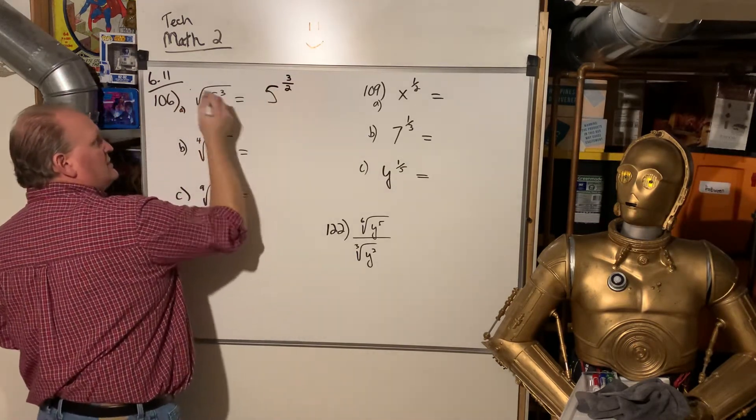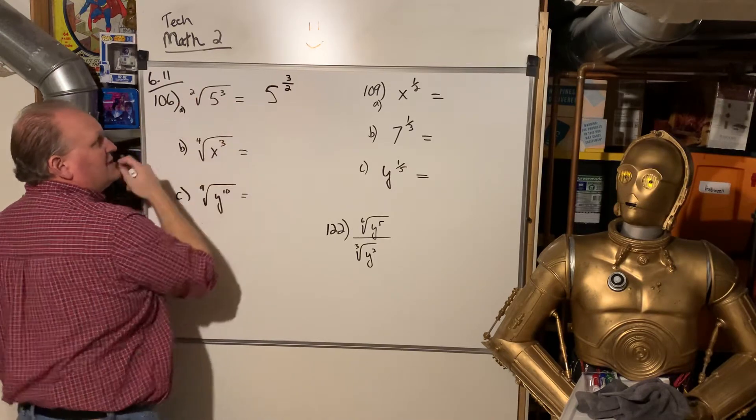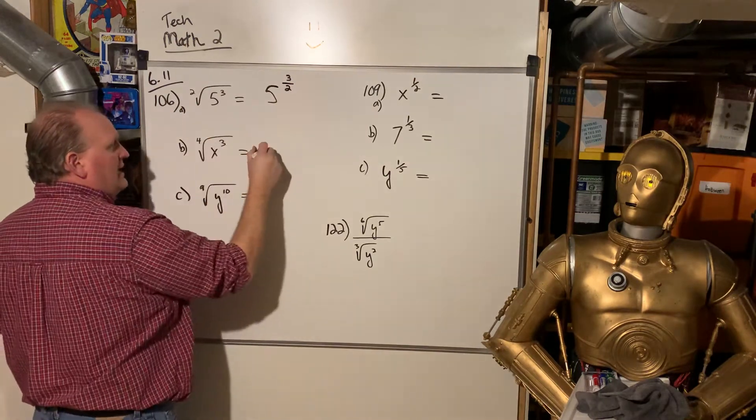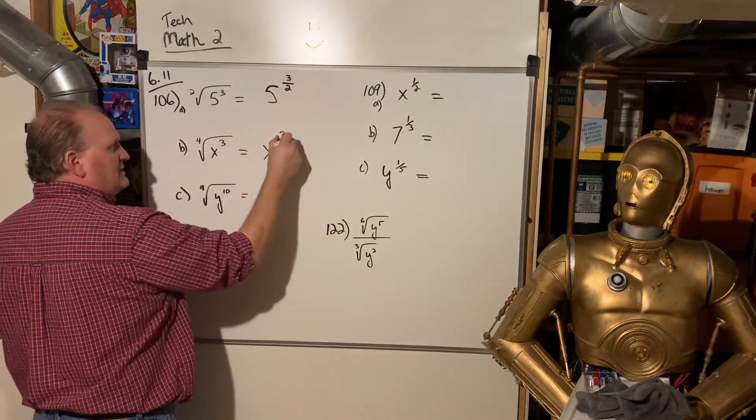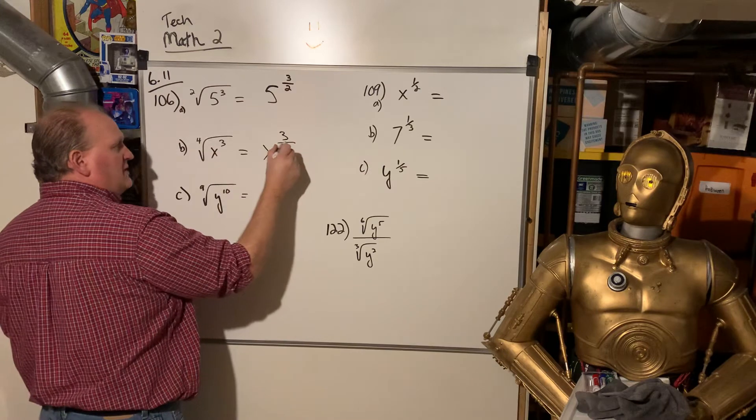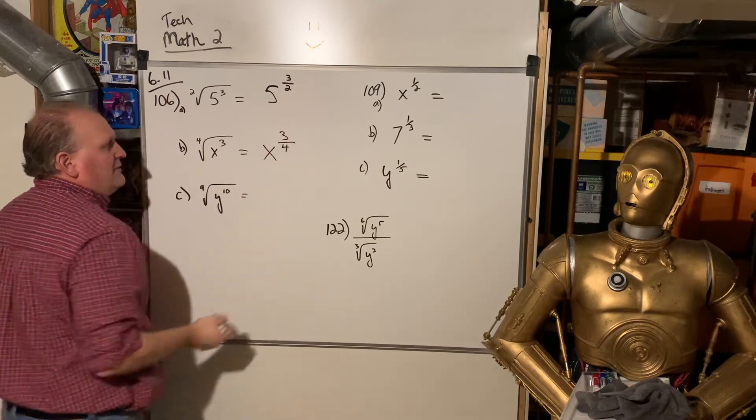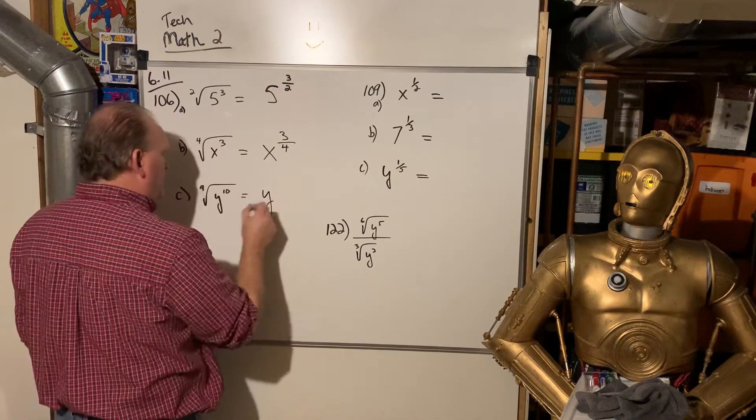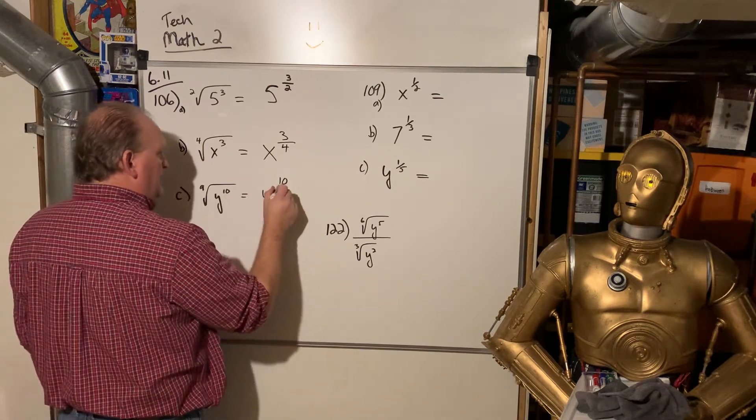So when it's a square root, we never write the 2 there, but there is a 2 there. So that is just 5 to the 3 halves. This is x, whatever's inside is on top, whatever's outside the index is on bottom, numerator and denominator, so that's x to the 3 4ths, and y to the 10 9ths.